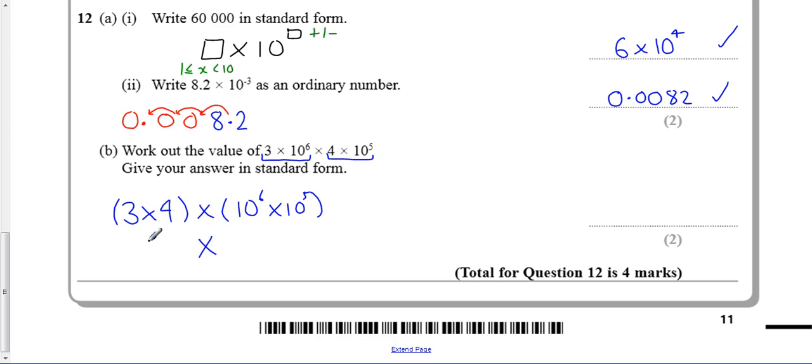So let's work out 3 times 4 is 12. 10 to the power of 6 times 10 to the power of 6 is 10 to the power of 11. But that's not written in standard form. It's not standard form. Why is it not standard form? Well because this number here is 2b. It's bigger than 10.